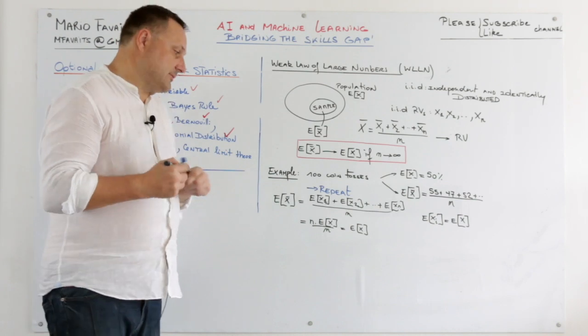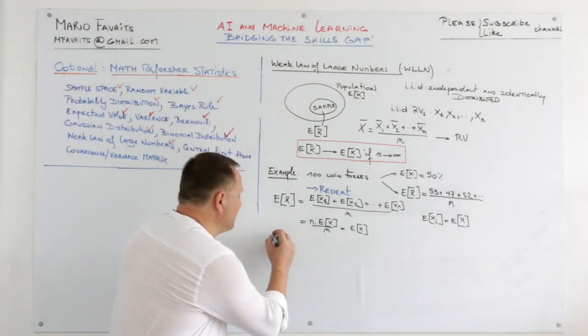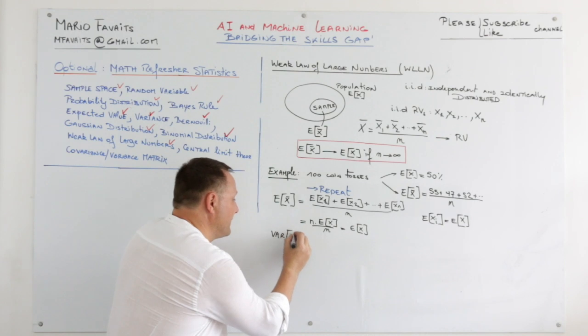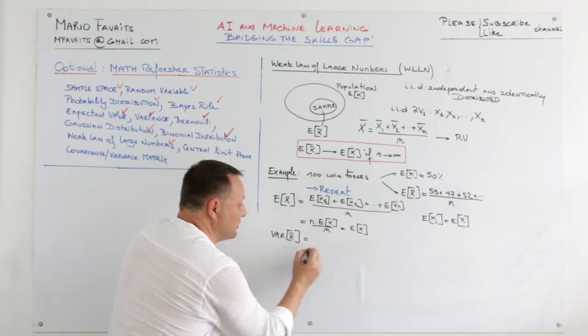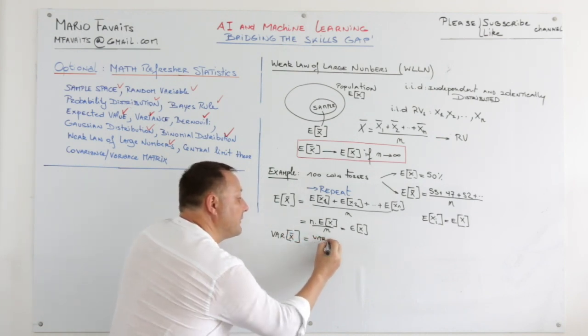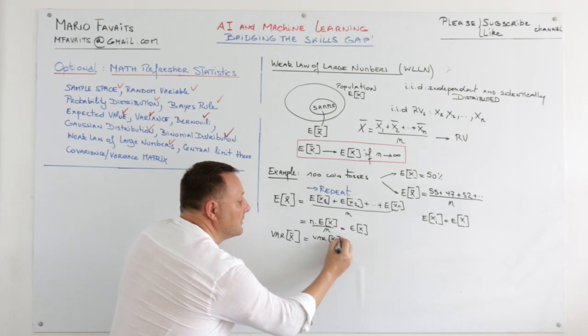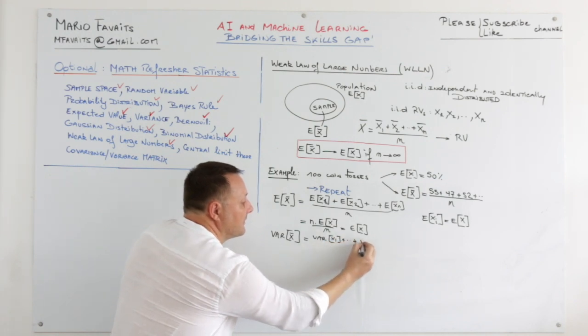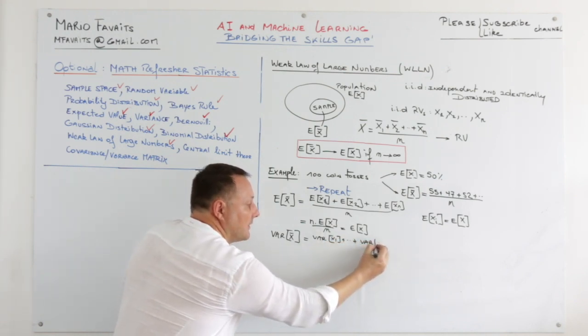Interesting to see is what happens to the variance, the sample variance, the variance of the individual random variables Xn.